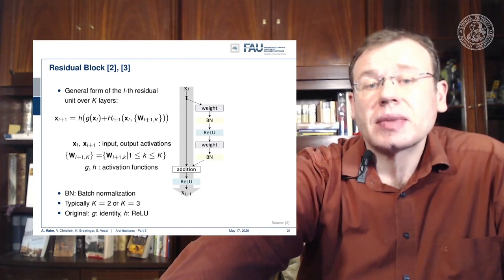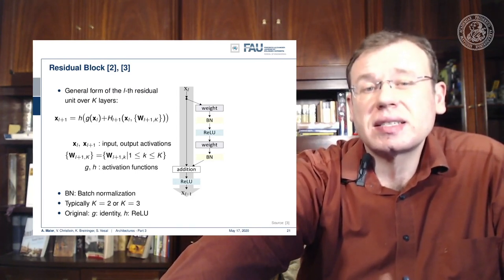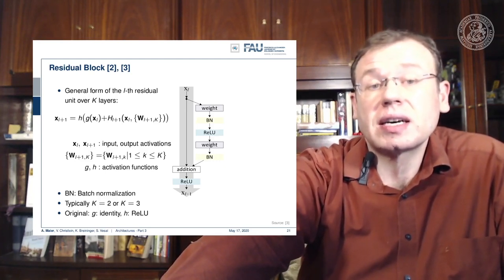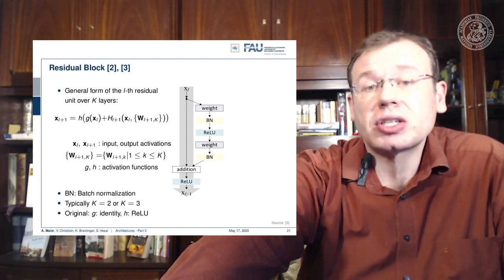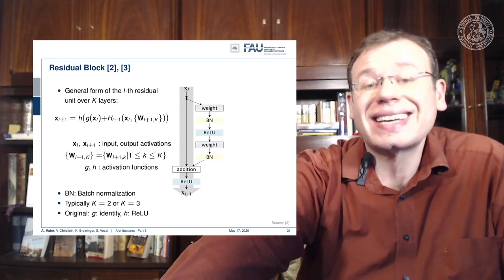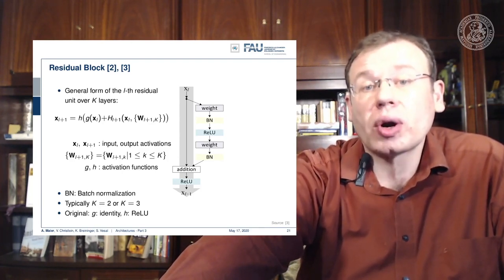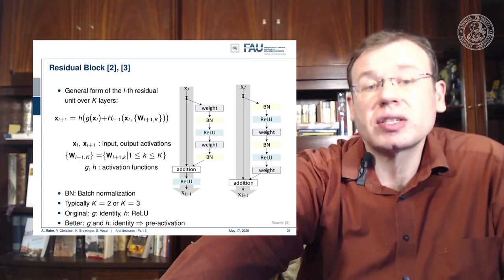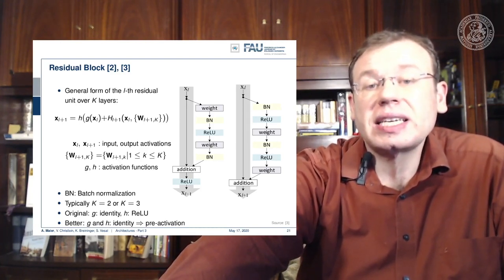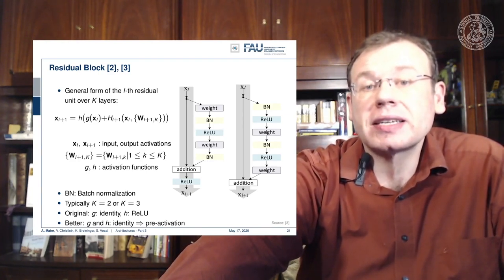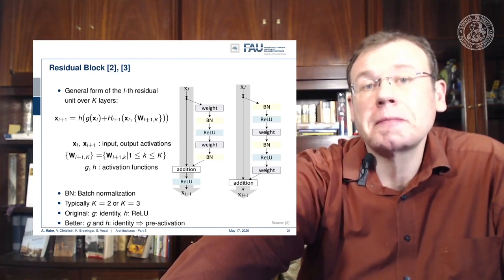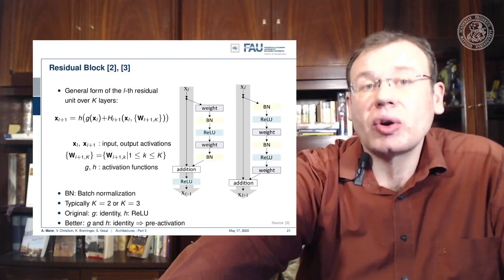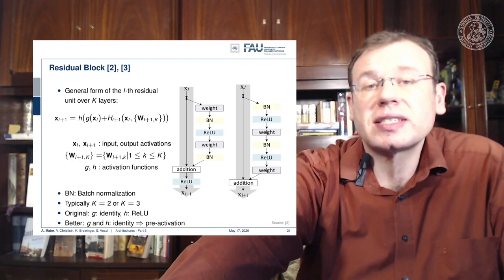In the original implementation of residual blocks there was a difference. We had the side branch with a weighting layer, batch normalization, ReLU, weights, another batch normalization, then the addition, and then another non-linearity — a ReLU — for one residual block. This was later changed to using batch norm, ReLU, weight, batch norm, ReLU, weight for the residual block. This configuration was more stable. We essentially have the identity back-propagated on the plus branch, which allows us to propagate the gradient back into the early layers just with this addition, giving much more stable back-propagation.